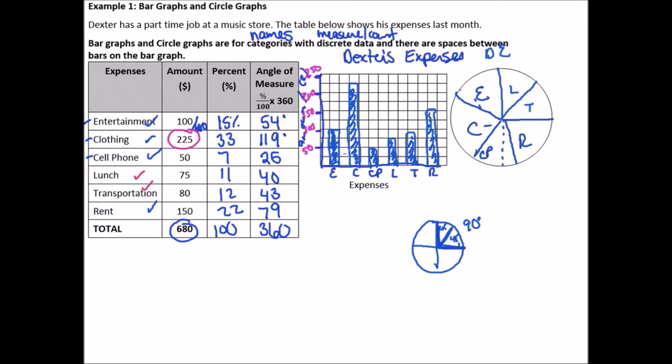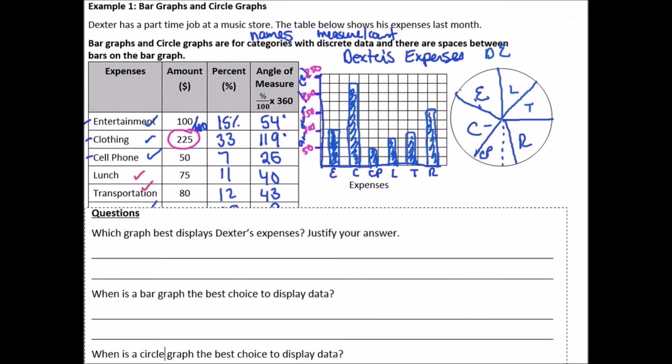So instead of being like a full quarter, it's just going to be less than a quarter. So instead of being from this line to this line, it's going to be a little bit less. So that's going to be rent. And then let's break up the last one into cell phone and clothing. So most of that's going to be clothing and then 25 degrees for cell phone. So let's go clothing and then cell phone. Okay. And that's how you make a circle graph.